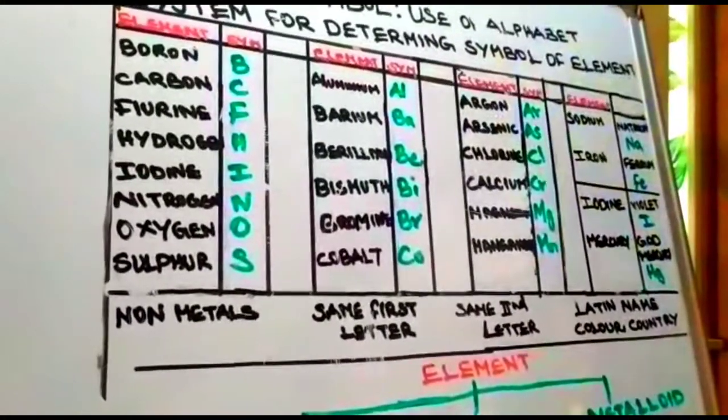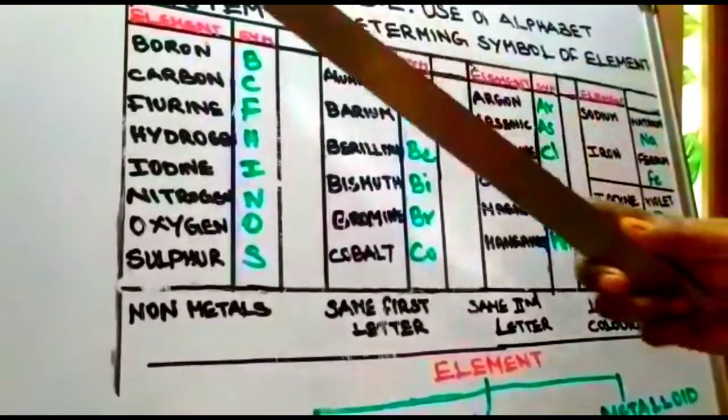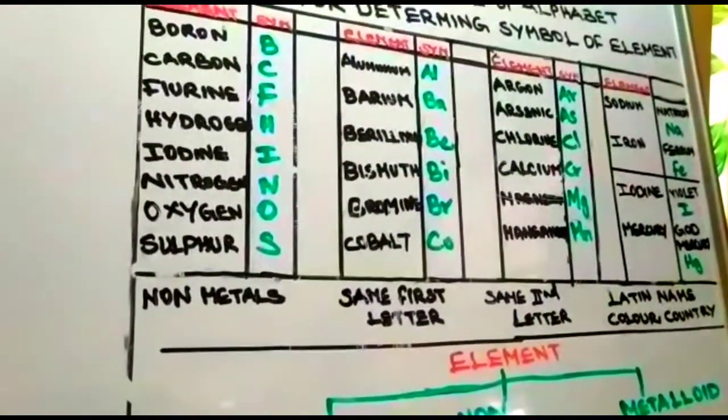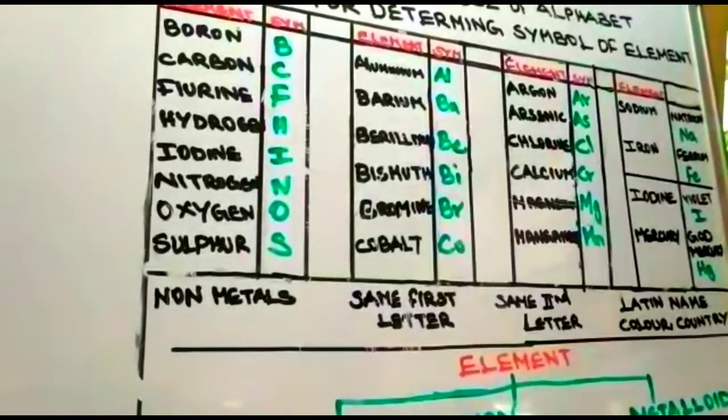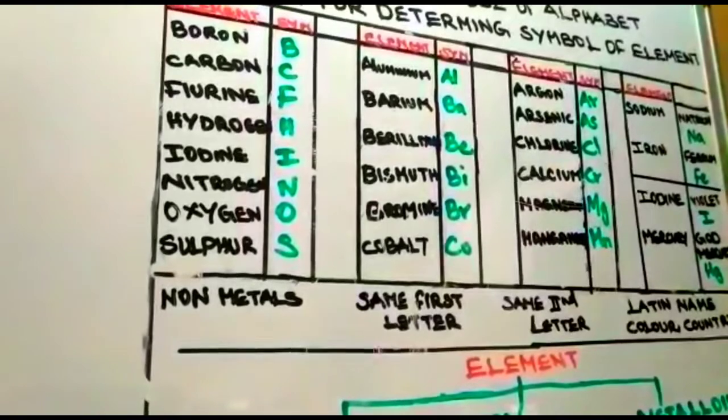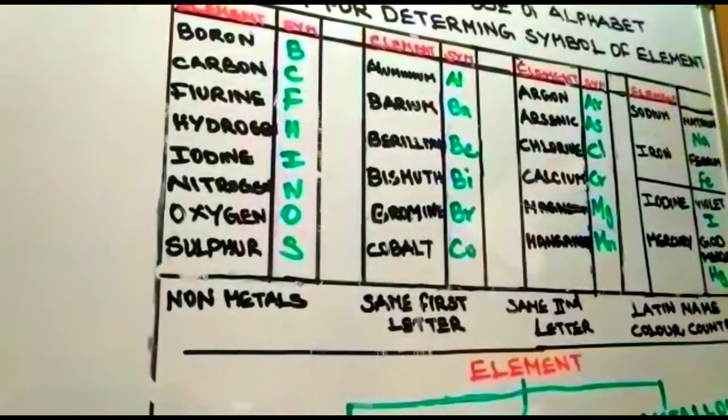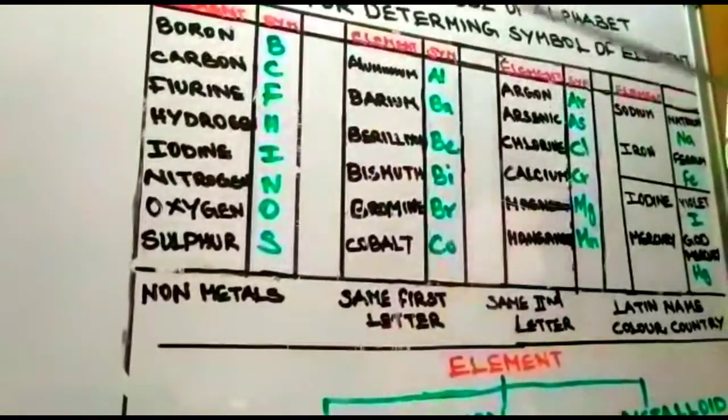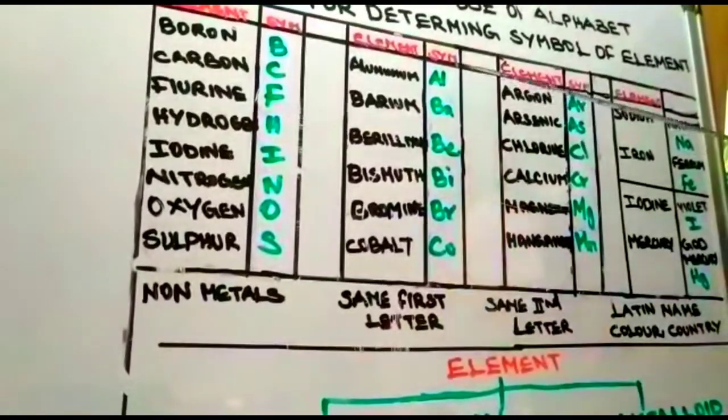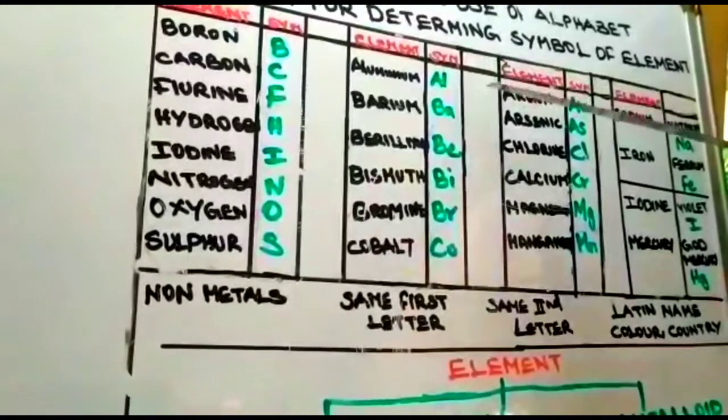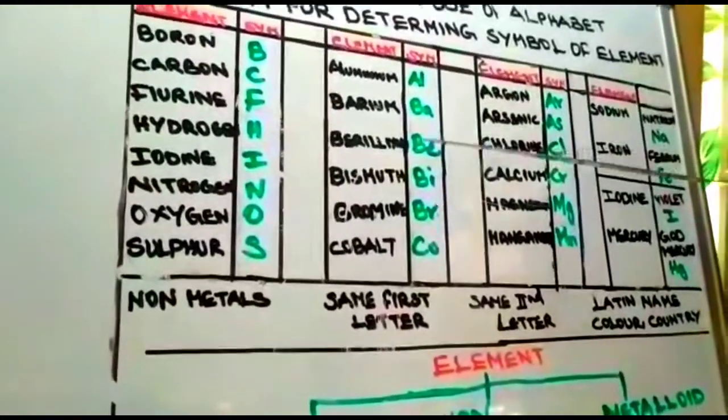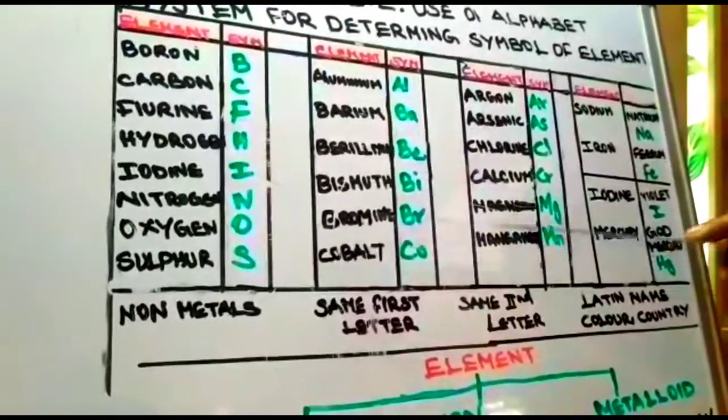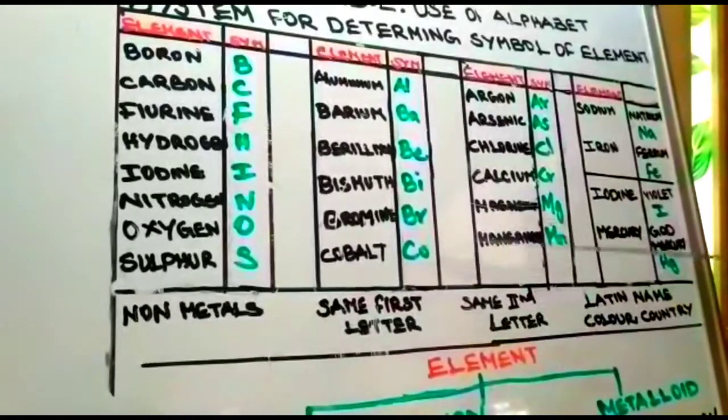There are few elements where elements have the same alphabet. For example, boron, beryllium, and barium all start with B. We cannot use the same symbol for both elements. In that case, we use the first and second alphabet as the symbol. The first alphabet is represented in uppercase and the second in lowercase. For example: aluminum Al, barium Ba, beryllium Be, bismuth Bi, bromine Br, cobalt Co.